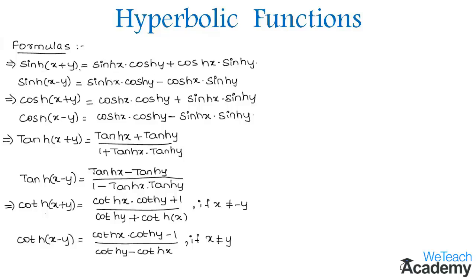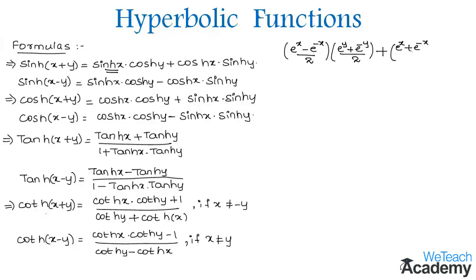In order to prove, we already know the definition of hyperbolic sin x and hyperbolic cos y. By substituting those values we get: (e^x minus e^(-x)) divided by 2, into the value of hyperbolic cos y which is (e^y plus e^(-y)) divided by 2, plus hyperbolic cos x which is (e^x plus e^(-x)) divided by 2, into hyperbolic sin y which is (e^y minus e^(-y)) divided by 2.